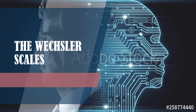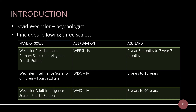The Wechsler Scales were developed by psychologist David Wechsler. There are three types of Wechsler Scales. The first is the Wechsler Preschool and Primary Scale of Intelligence, 4th edition, administered to children from 2 years and 6 months to 7 years and 7 months of age. The second is the Wechsler Intelligence Scale for Children, 4th edition, administered to children from 6 years to 16 years of age. The third scale is for adults from 16 years of age to 89 years of age.